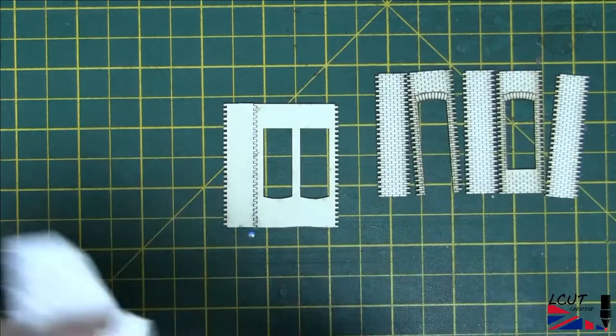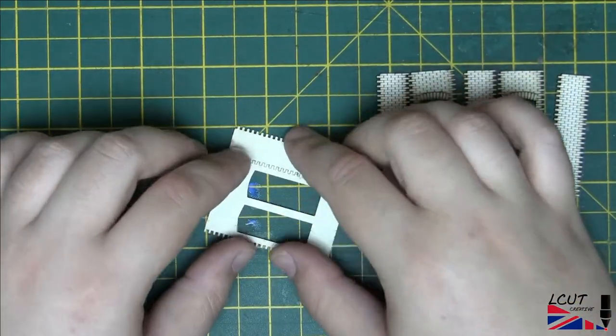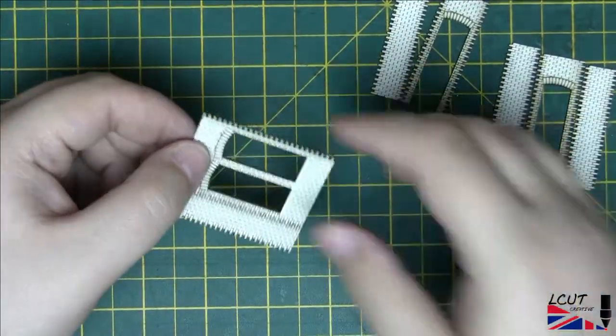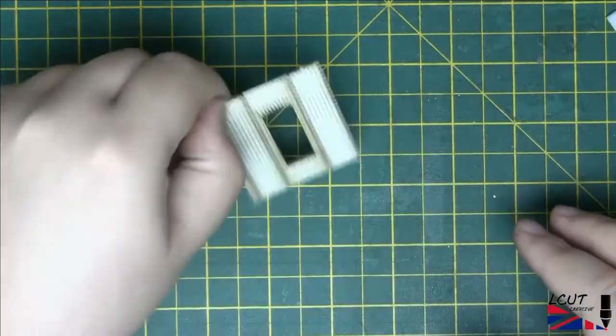To ensure the joint is as hidden as possible, take care and test fit the joint first. Recommended glue is either white glue such as PVA or wood glue, or the laser cut kit glue by Deluxe Materials.